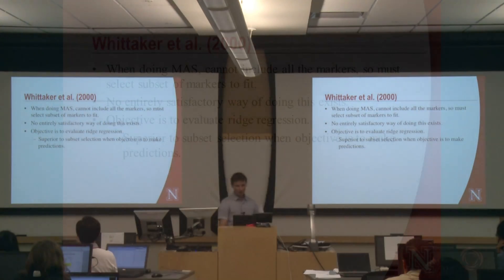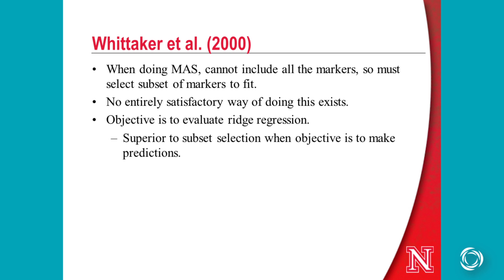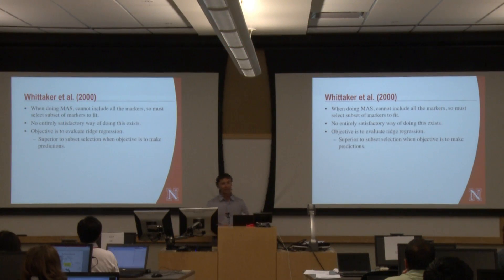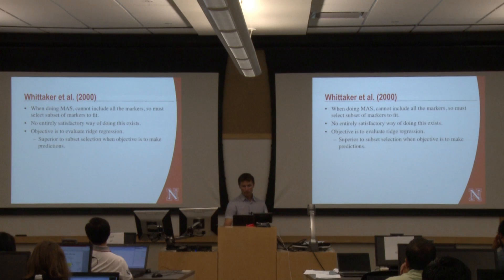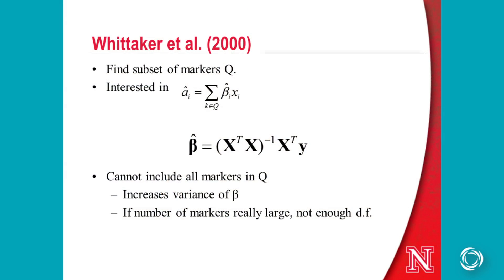I want to back up a little bit and give some history. Way back in 2000, Whittaker et al. pointed out that there's really no satisfactory way of doing marker-assisted selection — no perfect subset of markers that works really well. They wanted an approach that allowed them to estimate the effects of all markers simultaneously, and the statistical approach they took is called ridge regression. The traditional MAS approach selects a subset q of markers and estimates the effects of each.